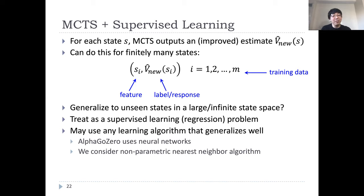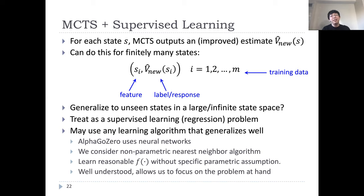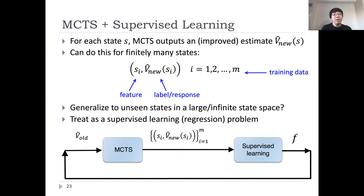In particular, one can use any learning algorithm that generalizes well. For example, in practice, one could use neural networks. For this theoretical work, we focus on nonparametric nearest neighbor method because we don't need to make specific model assumptions and the algorithm is well understood. This allows us to focus on the essentials of this overall approach. To summarize, we have this iterative algorithm where at each iteration, MCTS uses previous value function estimator to evaluate the leaf nodes. We query finitely many states to obtain a training data and then generalize to the entire space using nearest neighbor. The newly learned value function estimator will then be used at the next iteration.